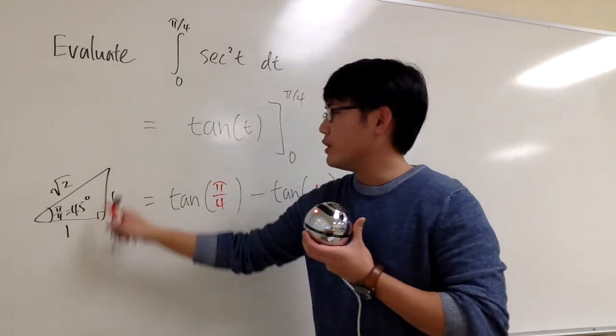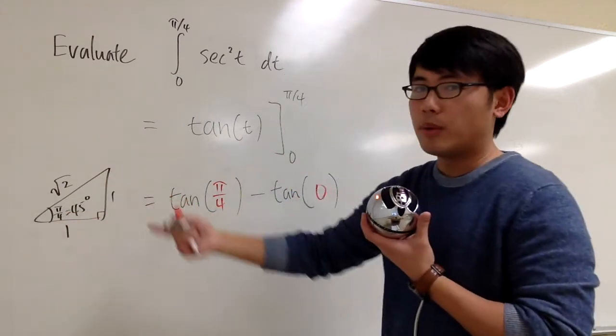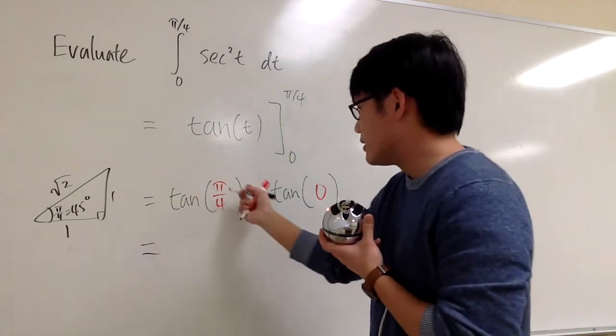Tangent of pi over 4, you do the opposite over adjacent: 1 divided by 1, which is 1. So tangent of pi over 4 is 1.